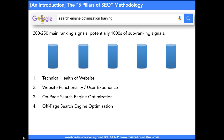Pillar number four: off-page SEO. I'm very passionate about off-page SEO. It's basically anything that happens outside of your website that tells Google that your website is relevant for those search terms. And you can do a lot with off-page SEO, so I hope I'm getting you a little bit excited about what's possible outside of your website.